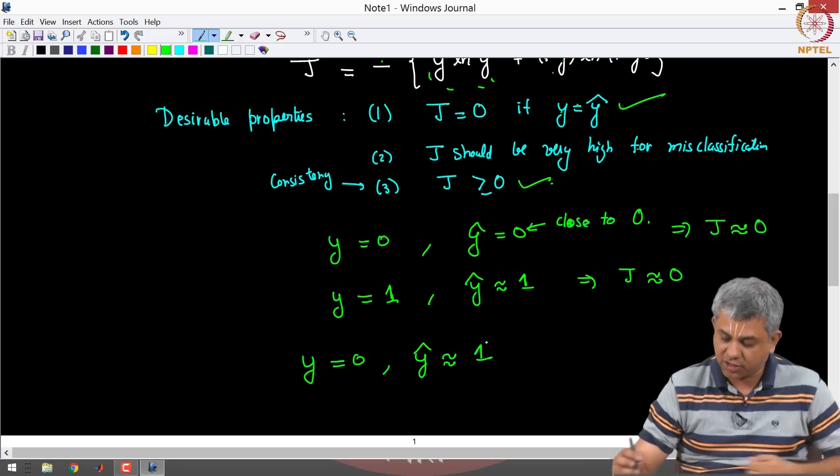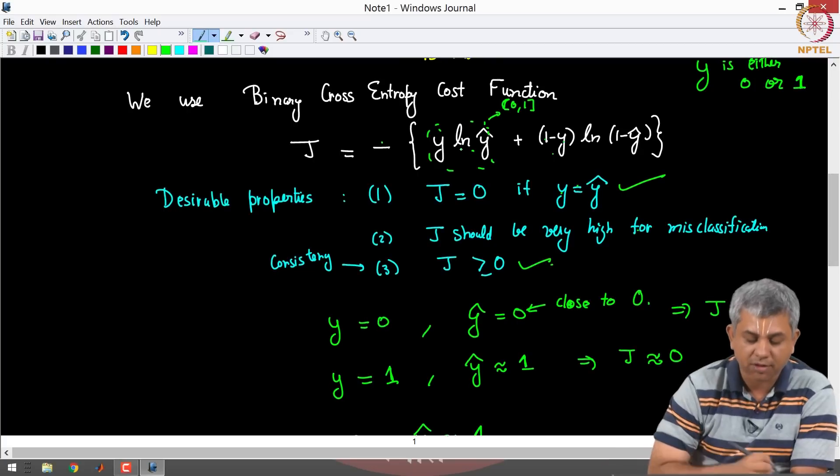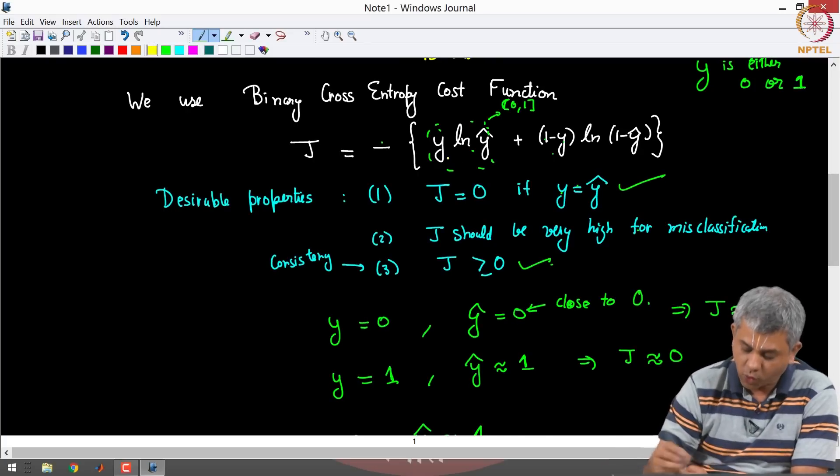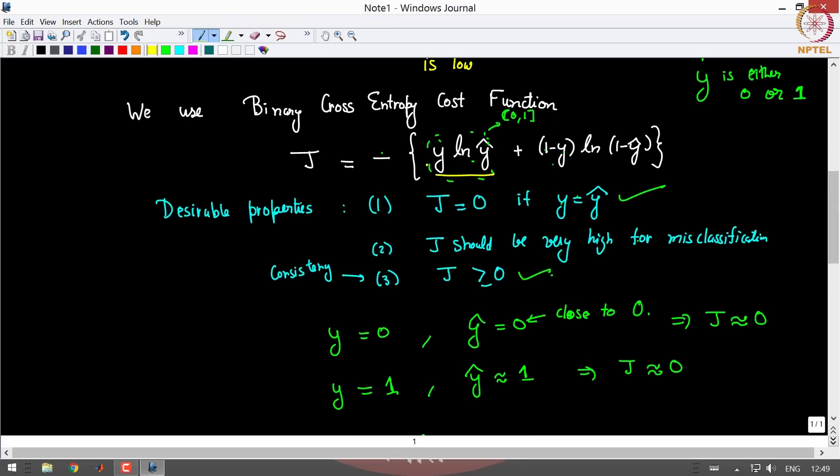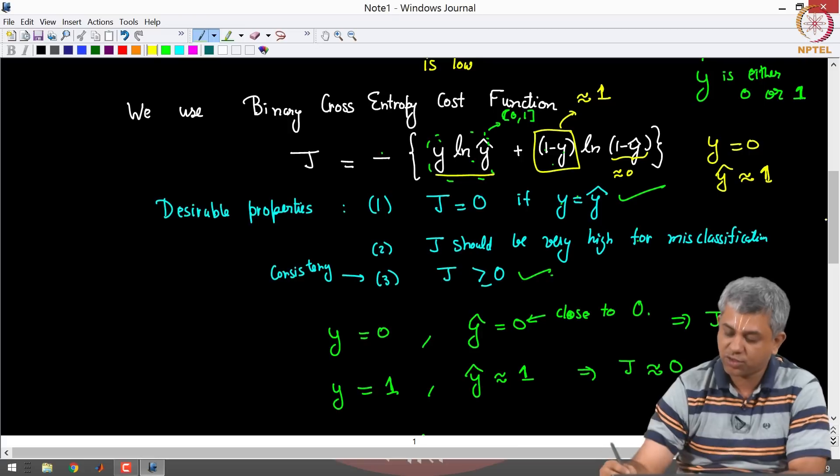Then what happens to the cost function? So let us take a look. So in this case Y was 0, so this term actually becomes 0 because Y hat is close to 1 and this term becomes actually 0 because Y is actually 0. So what happens to this term? Y is 0 which means the coefficient here is approximately 1 and Y hat is approximately 1 which makes this term approximately 0, and what is ln of 0? Ln of 0 is minus infinity. So you have got a minus sign here and you are going to throw up a really high cost because you have misclassified. So that is the trick that we are using.